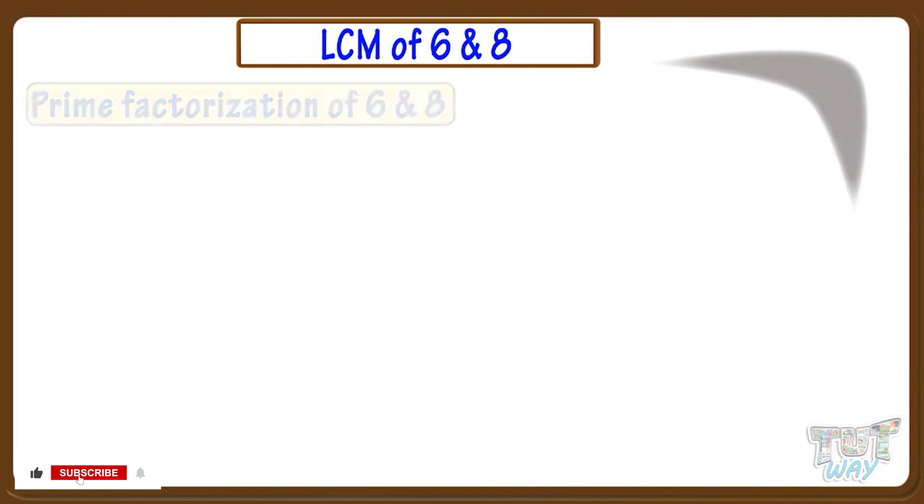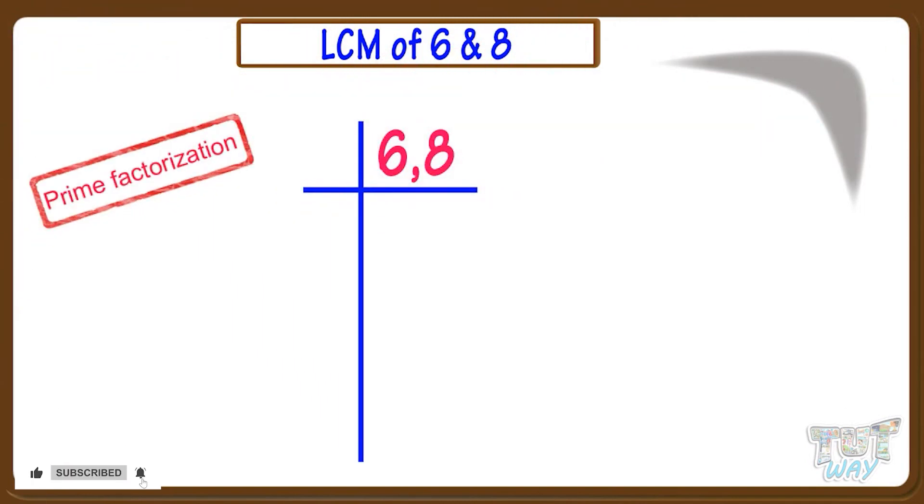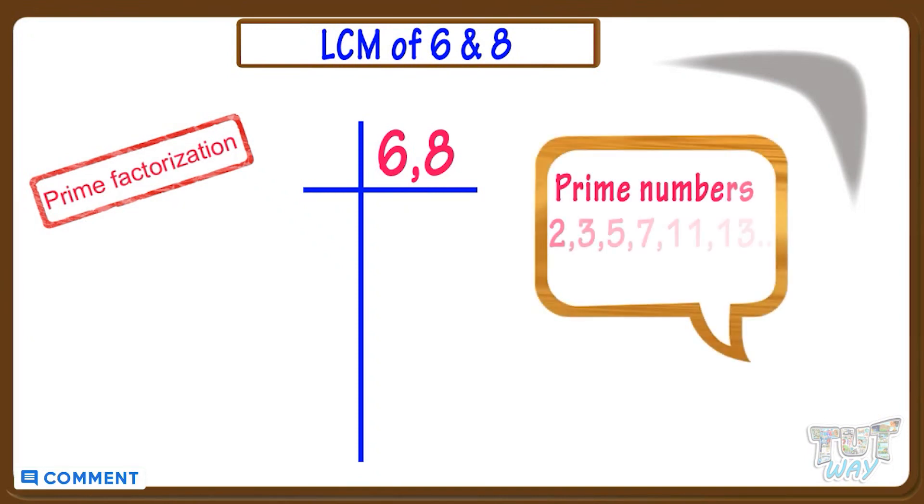We have to find the LCM of 6 and 8. So we will do the prime factorization of 6 and 8 first. We divide all the numbers with prime numbers only. That is 2, 3, 5, 7. Starting with the smallest prime number, that is 2, and keep dividing till every number is reduced to 1. So let's start.